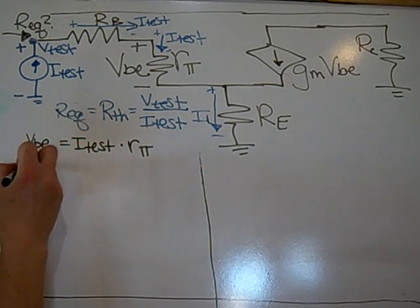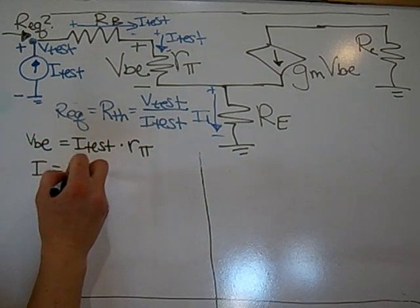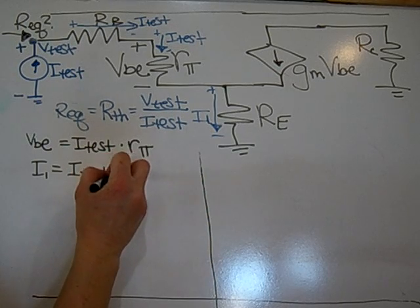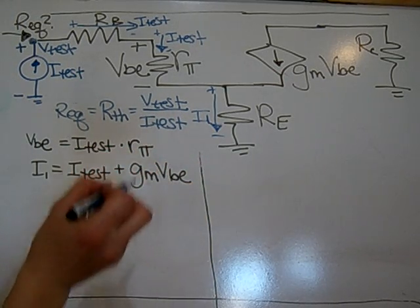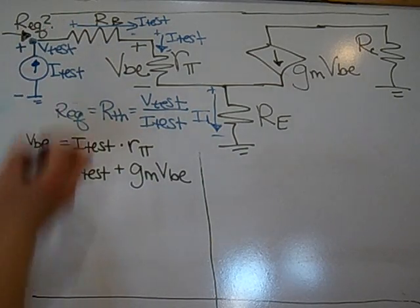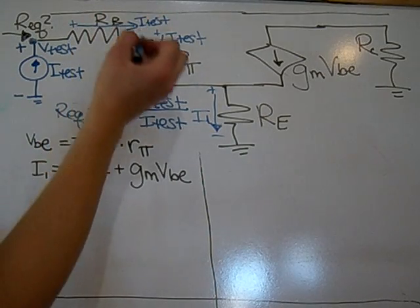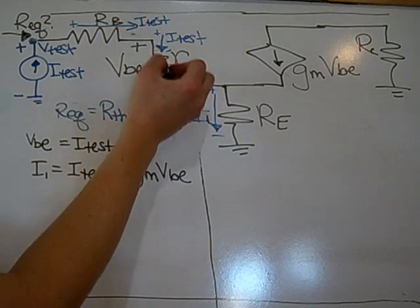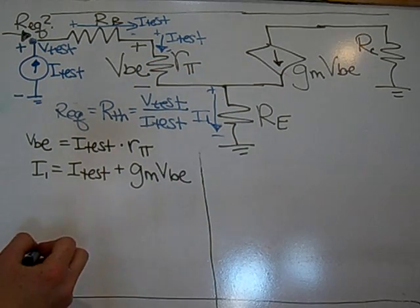I-1 is the summation of I-test and gm V-be. And if I take a loop using this drop here as V-test, I have plus V-test minus I-test Rb. Going through here would be a minus I-test R-pi, and then a minus I-1 Re.